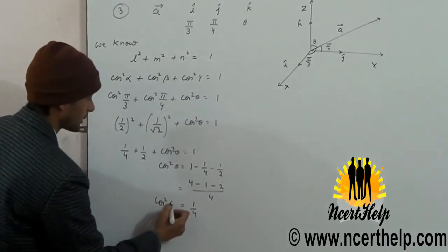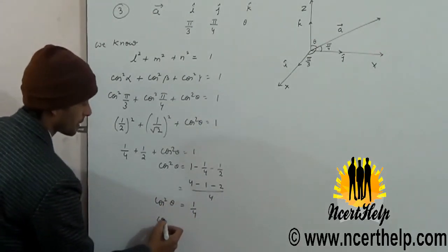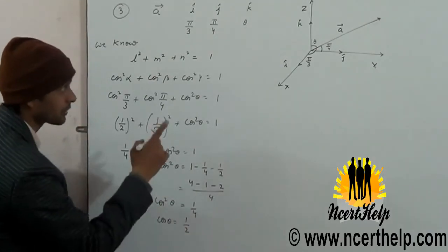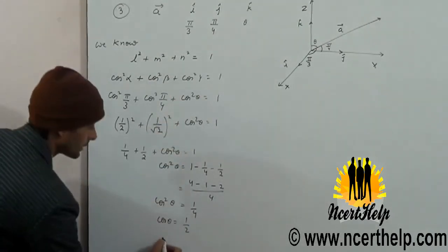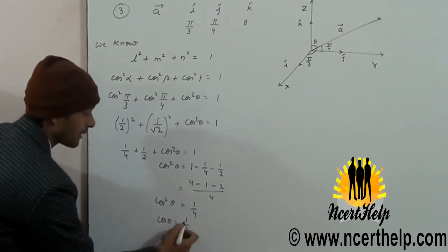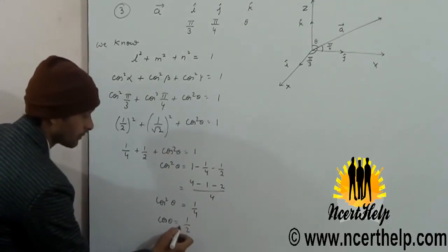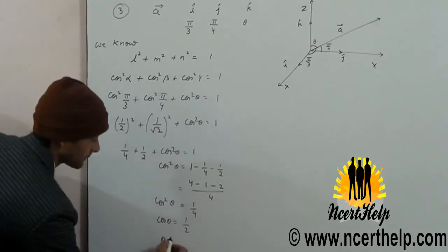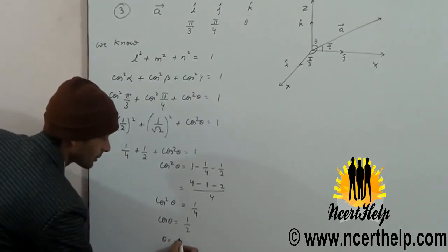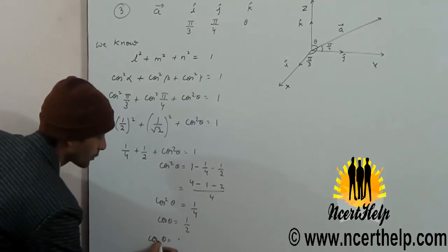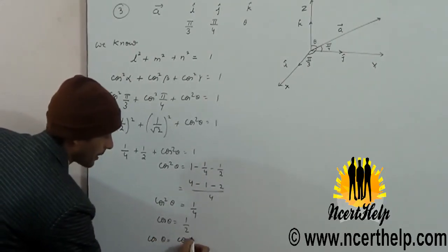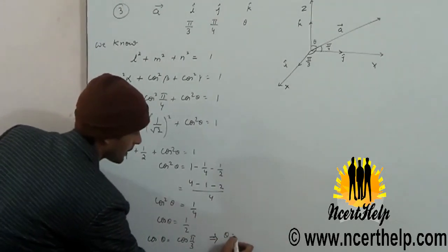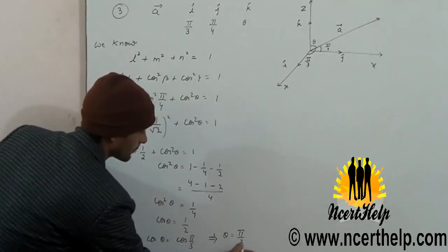Therefore, cos²θ = 1 − 1/4 − 1/2 = 1/4. So cos²θ = 1/4, which gives cos θ = 1/2, meaning θ = π/3.